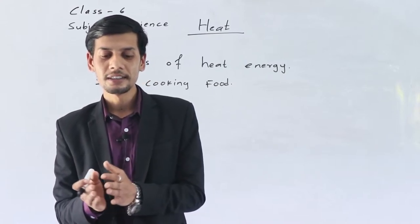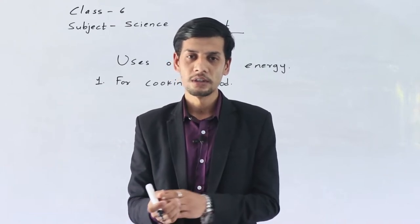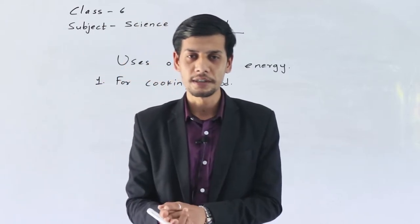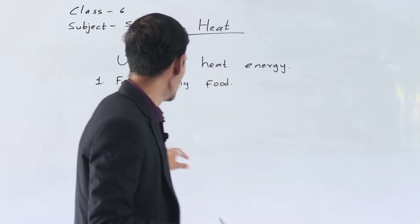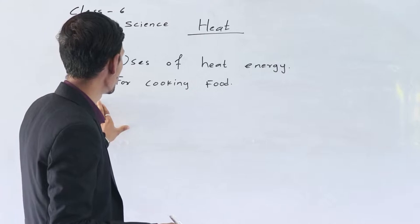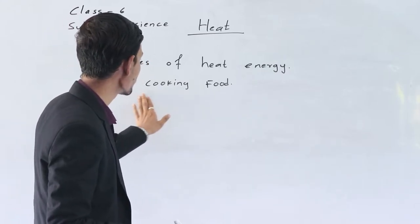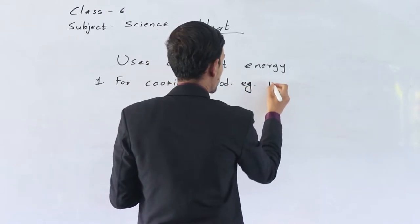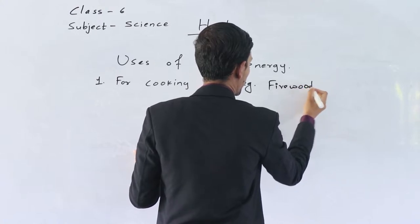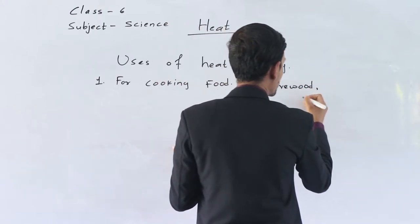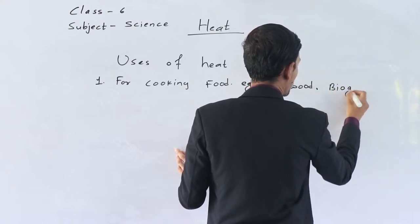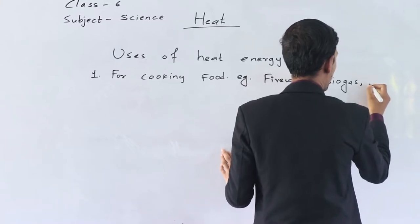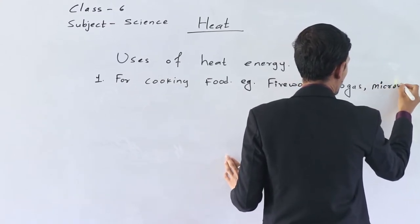For cooking purpose we mainly use firewood, biogas, and LPG gas. What are the sources of heat energy to cook food? For example, we can use firewood, we can use biogas, and we can also use a microwave.